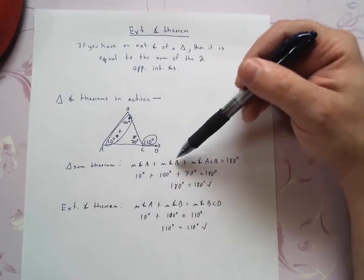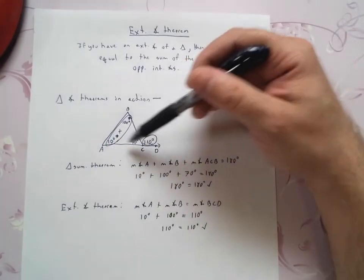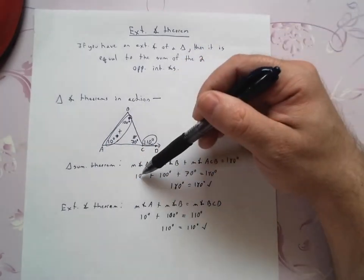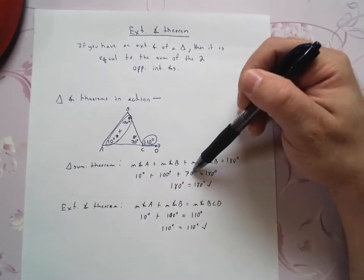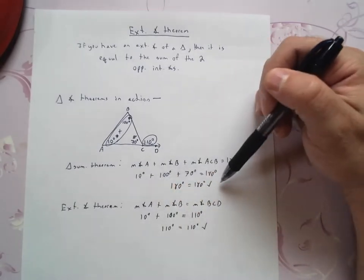So measure of angle A, measure of angle B, plus measure of angle ACB. Add those together, it's 180 degrees. So that's 10 degrees plus 100 degrees plus 70 degrees. That's 180 degrees.